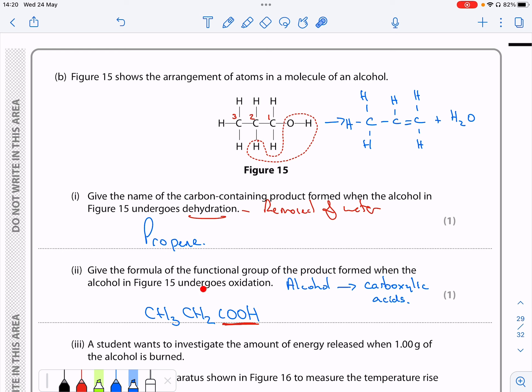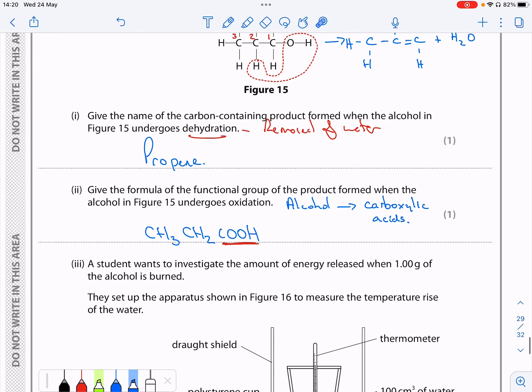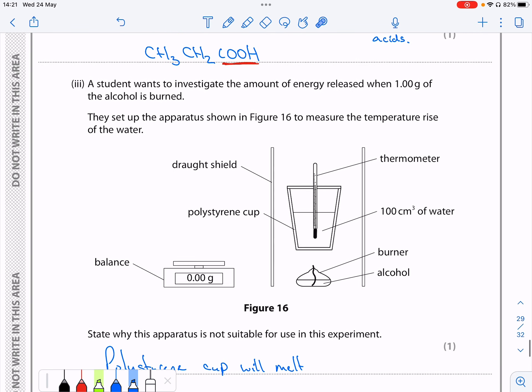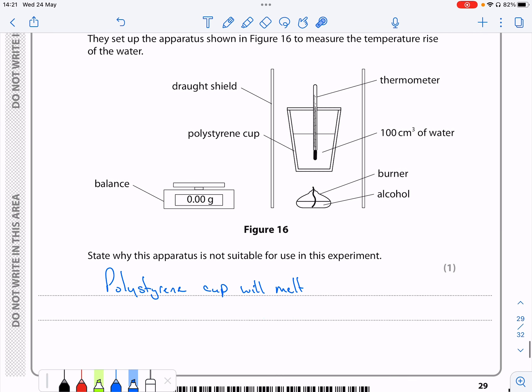Give the formula of the functional group when the alcohol is oxidized. Oxidized means adding oxygen. If we oxidize alcohol, we form carboxylic acid, so the functional group is the bit underlined there in red. And then the next little bit here: what is wrong with this?